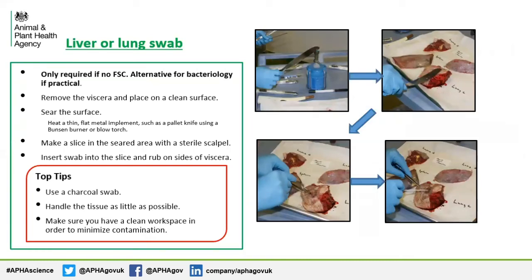How to do this: remove the viscera and place on a clean surface. Heat your palette knife with a flame and then press the palette knife gently and swiftly onto the surface of the viscera. Incise the seared zone with a sterile scalpel and open the incision with a flame-sterilised set of rat-tooth forceps. Rub the swab along the parenchyma within the incised area — it is a charcoal swab that you require for this. It may be worth carrying a simple baking tray in your car that can be disinfected so that you will always have a clean surface available to work on.